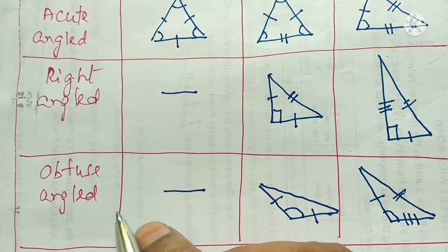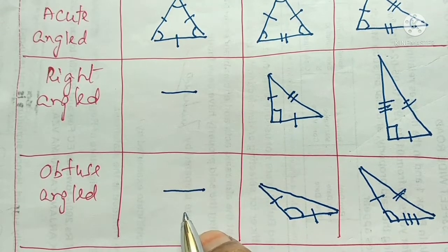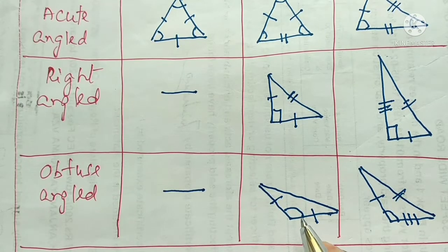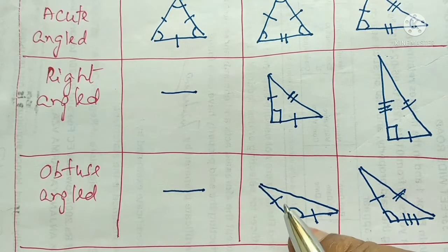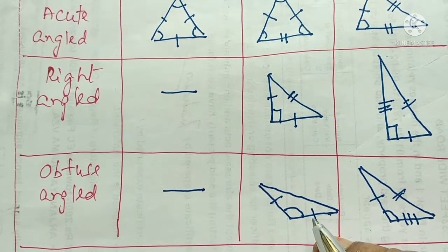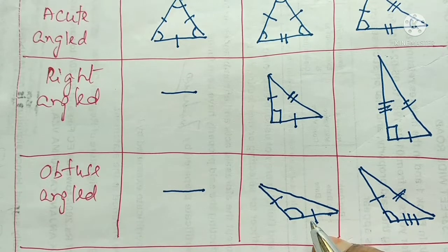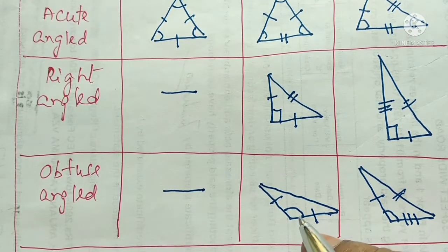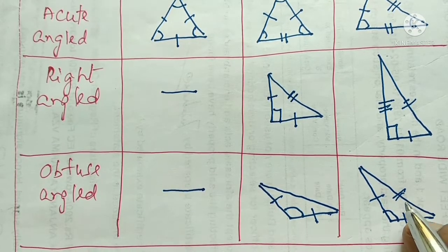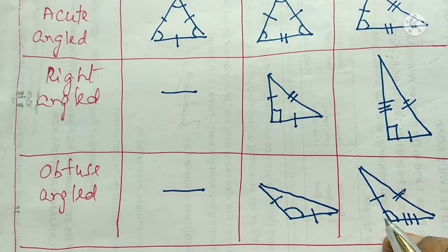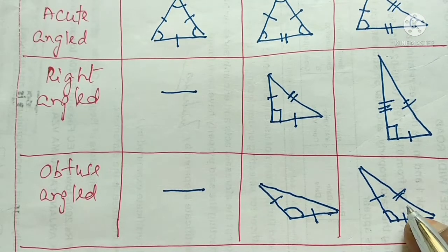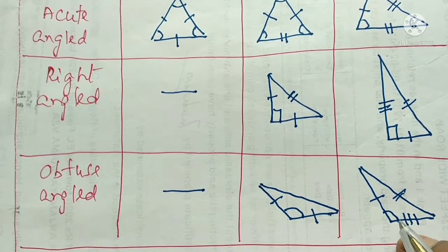For the obtuse angle triangle, one angle is more than 90 degrees. We can have an equilateral, isosceles, or scalene triangle combined with obtuse angles. For an isosceles obtuse triangle, two sides are equal but one angle is more than 90 degrees. For a scalene obtuse triangle, all sides are entirely different and one angle is more than 90 degrees.